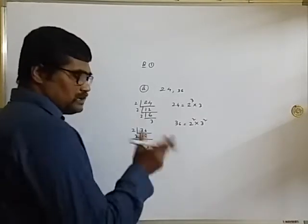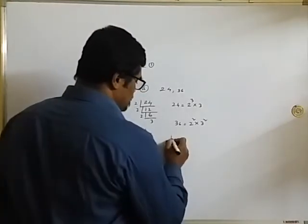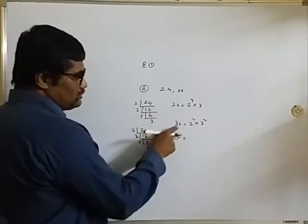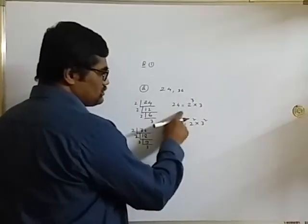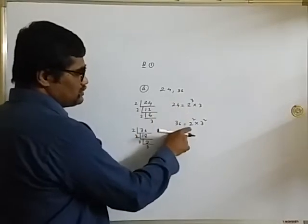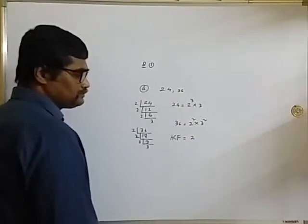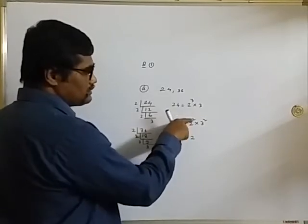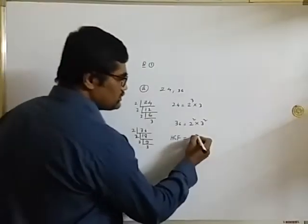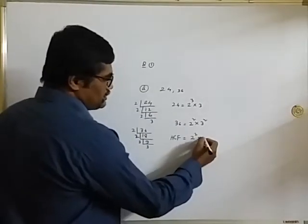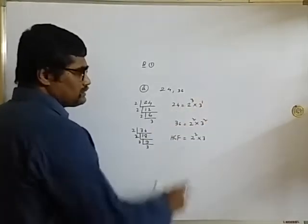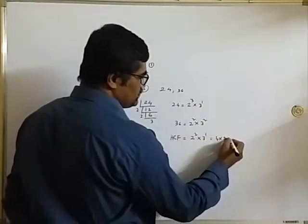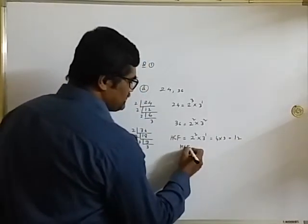Now for HCF: identify the common prime factors of the two numbers. Both have 2 and 3 as common factors. For HCF, choose the lower power for each common factor. For 2: powers are 3 and 2 — the lower is 2. For 3: powers are 1 and 2 — the lower is 1. So HCF = 2 squared into 3 = 4 into 3 = 12. HCF is 12.